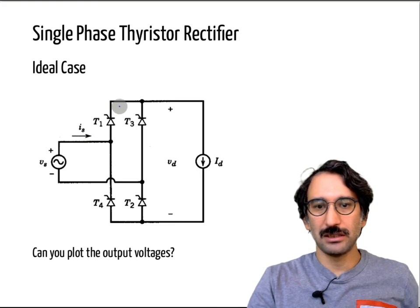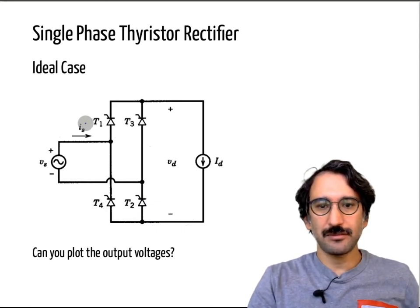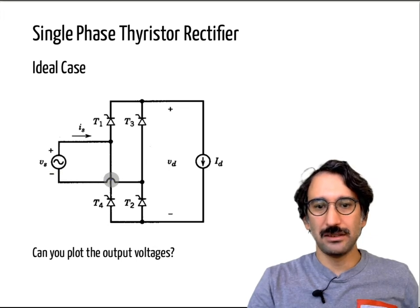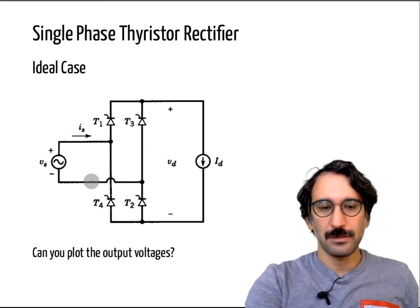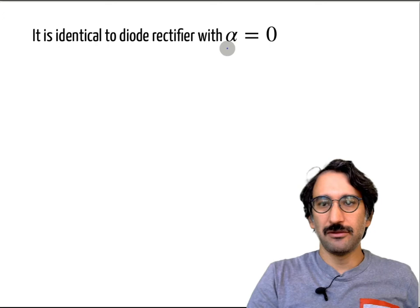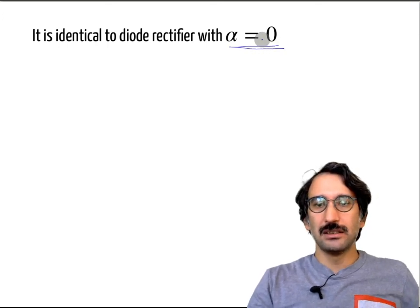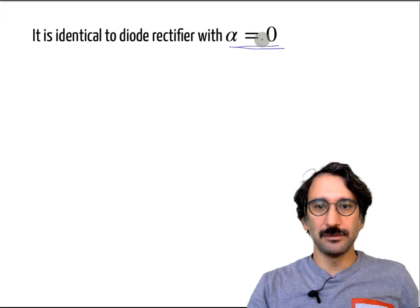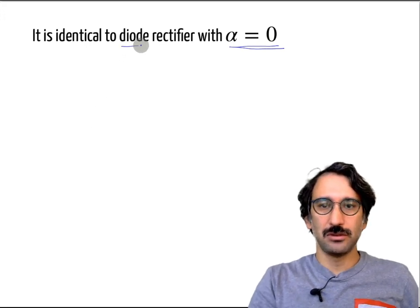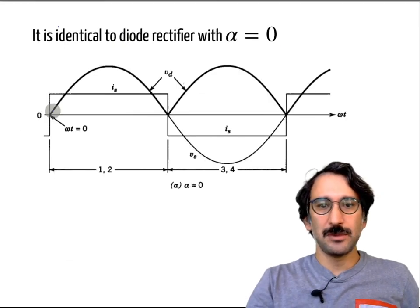Similar to diode rectifiers, the thyristors work in pairs. In one period the current will be coming through T1 and T4, and in the next cycle when Vs is negative, we have T3 and T4. The idea is the same — if you keep the firing angle alpha equal to zero, meaning whenever the thyristor is forward biased you fire it at that instant, it behaves like a diode.